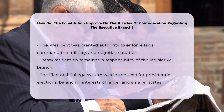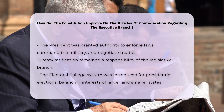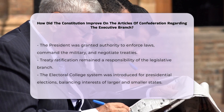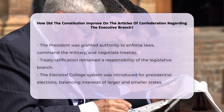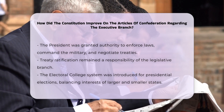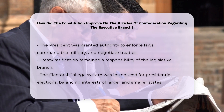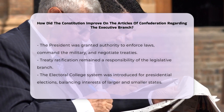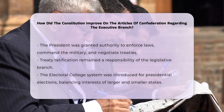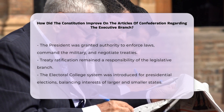The method of electing the President was also a point of contention and compromise. Unlike the Articles, where decisions were made by state delegations, the Constitution introduced the Electoral College System for Presidential Elections. This system allowed for a balance between the interests of larger and smaller states.